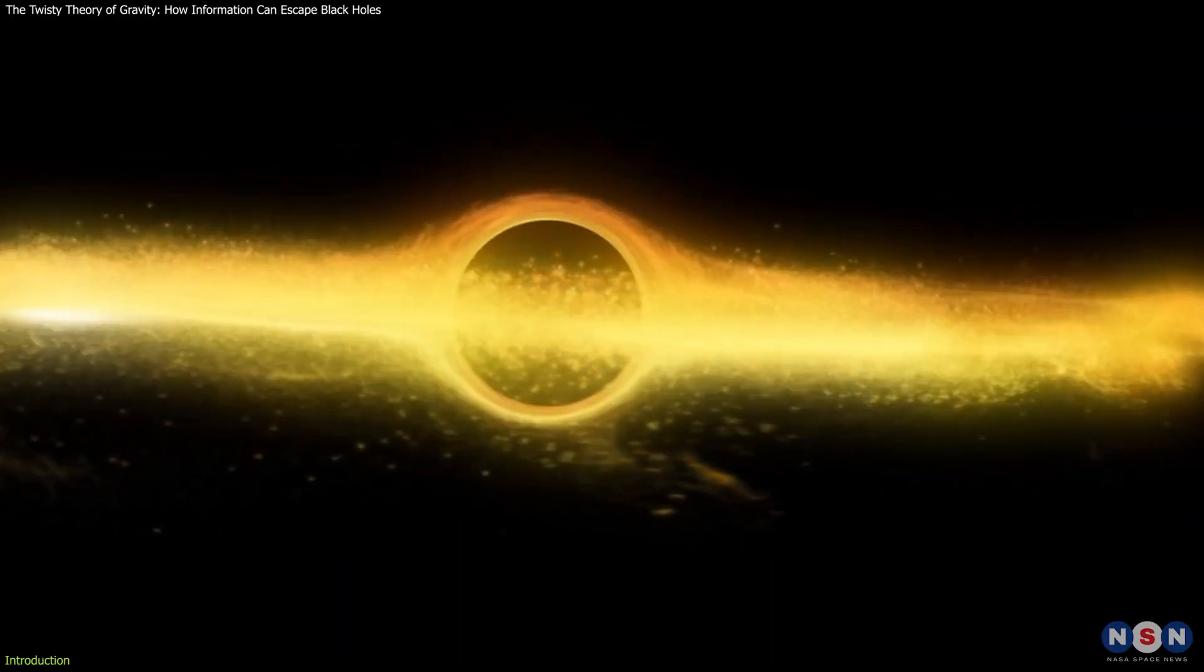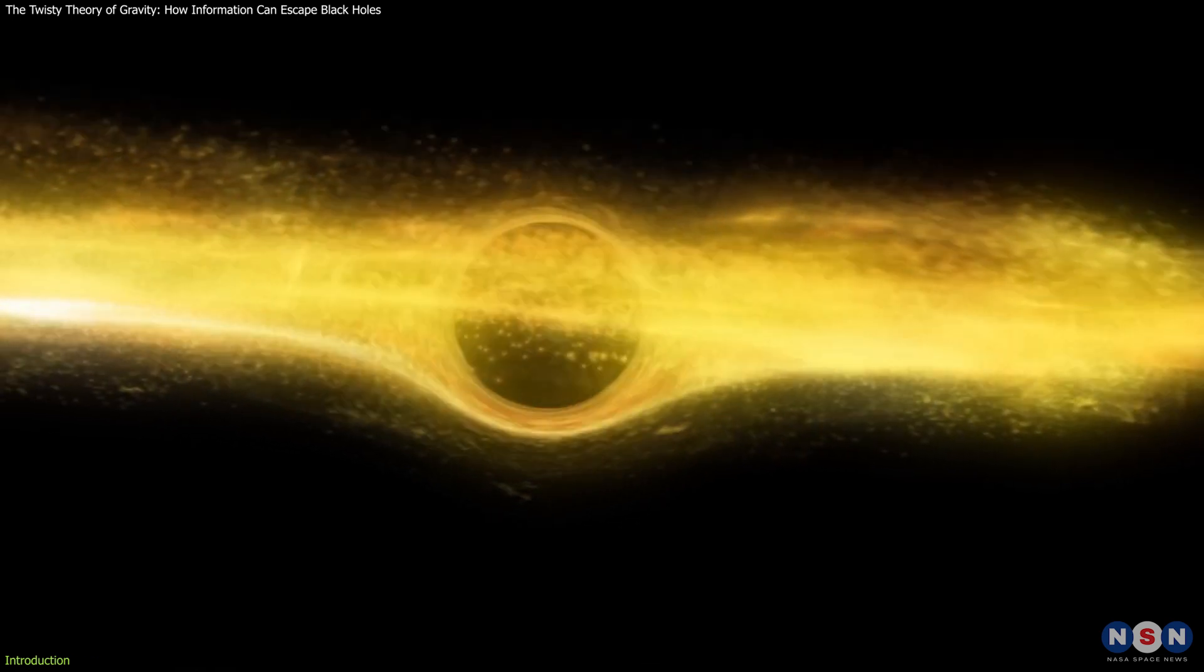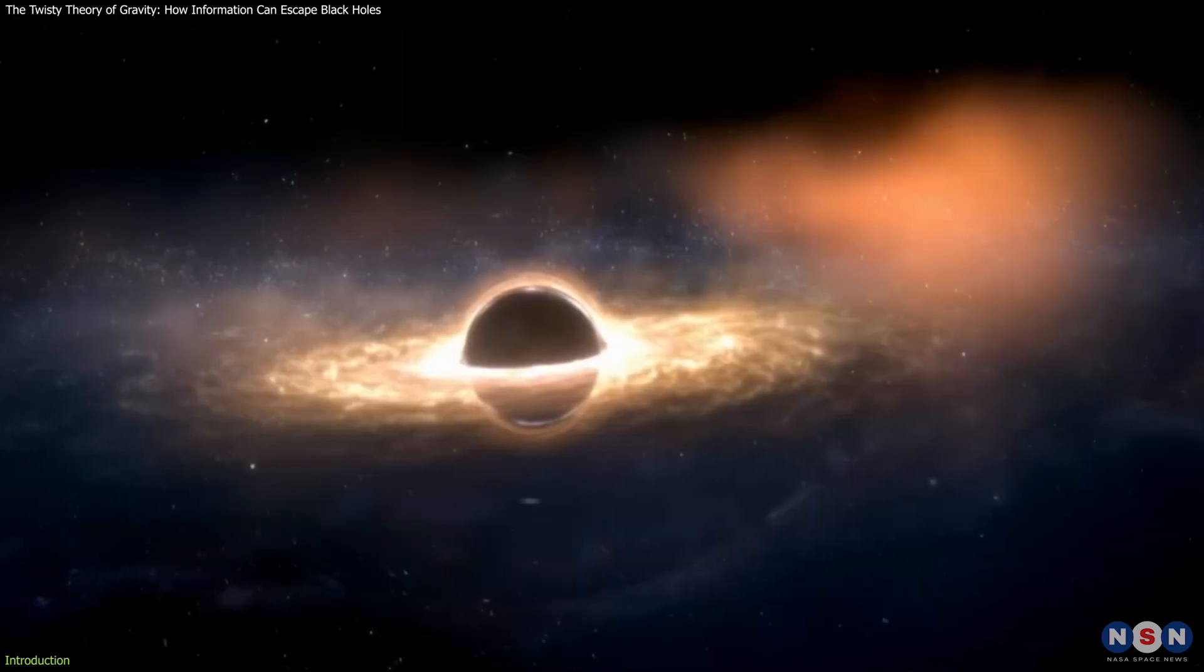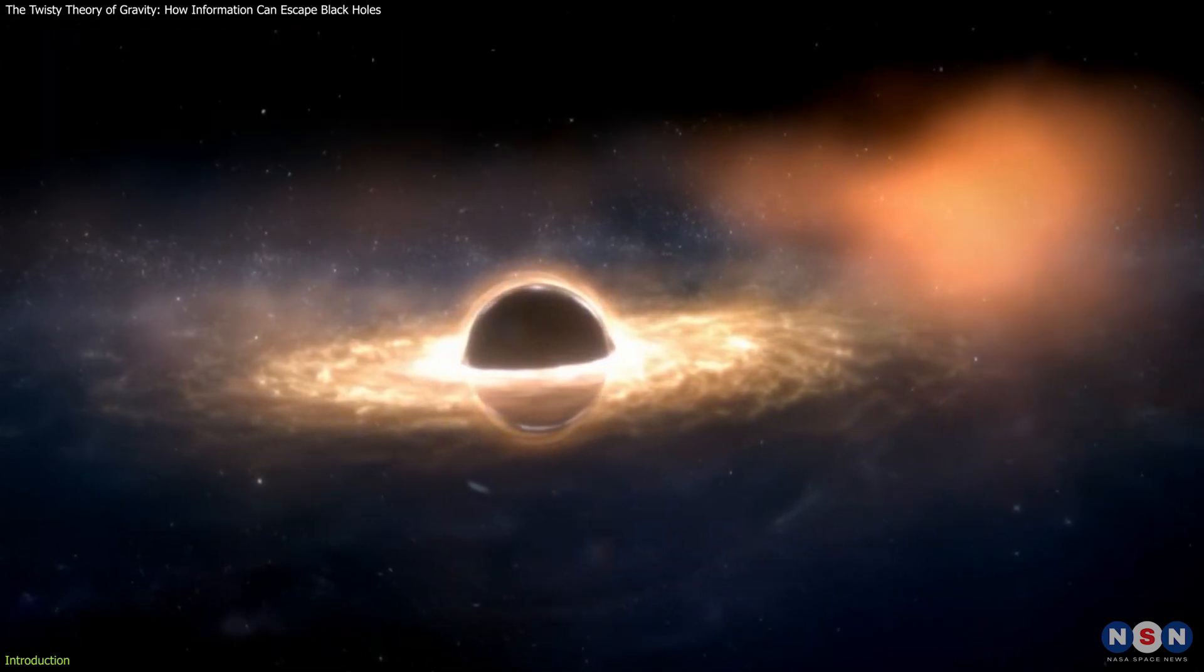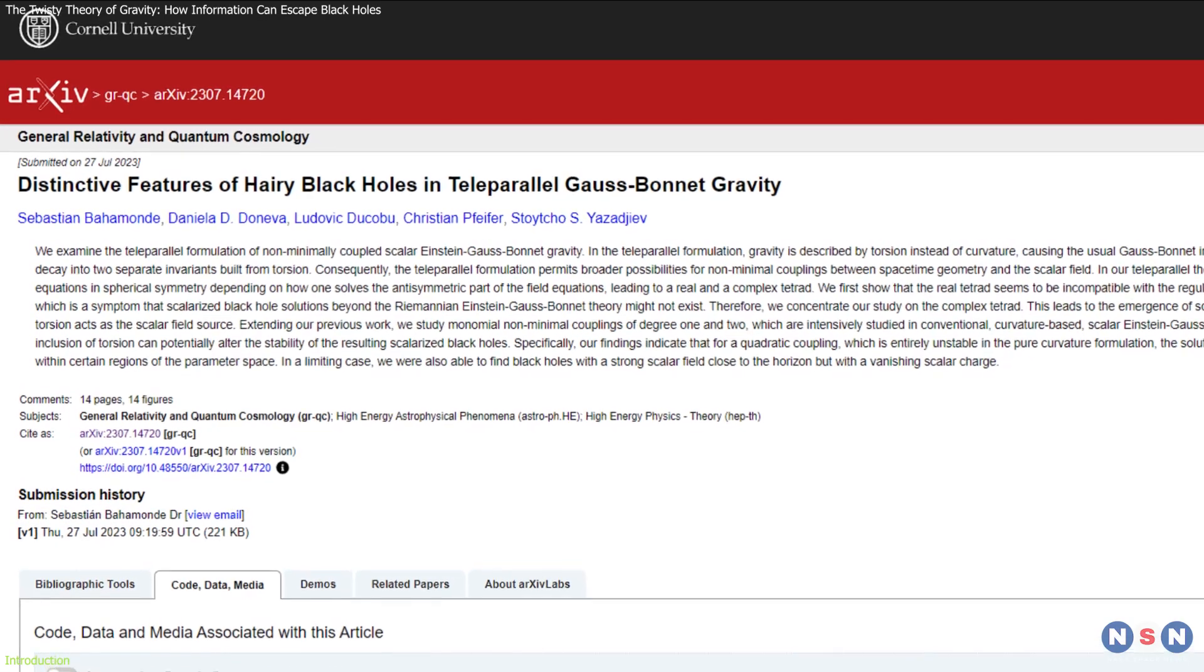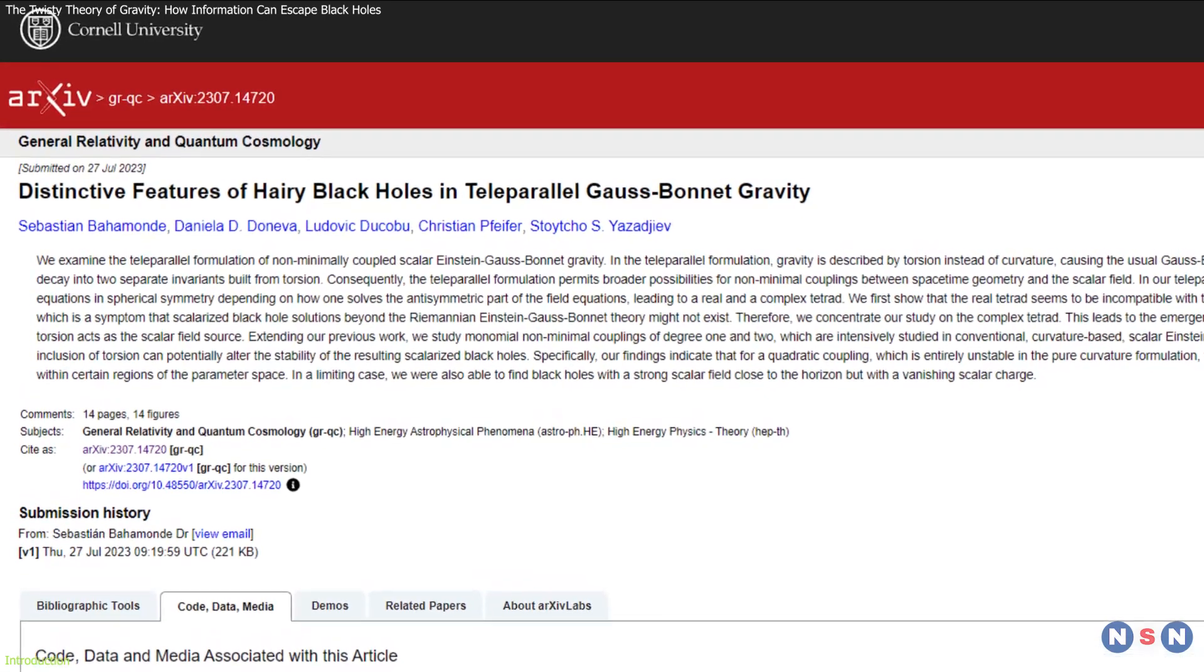A team of theoretical physicists has recently explored how a twisty theory of gravity could approach the problem of black hole hairiness. They detailed their work in a paper published in the Preprint Database Archive in July.